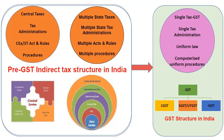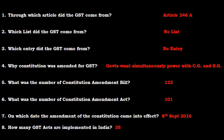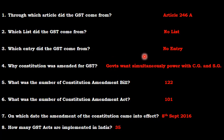Let's revise a few points. How did GST come to India? GST came to India through Article 246A. Did GST come from any list? The answer is no. Did GST come from any entry? The answer is no. Why was the Constitution amended for GST? So that state and central government could have equal power, which was not possible through any list or entry. What was the number of the Constitution amendment bill? The number is 122. What was the number of the Constitution amendment act? The number is 101. On which date did the amendment of the Constitution come into effect? The answer is 8 September 2016.